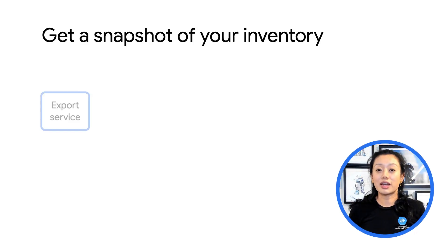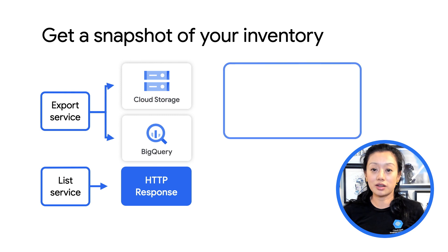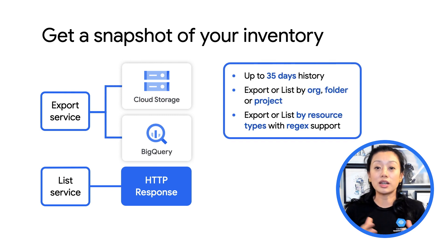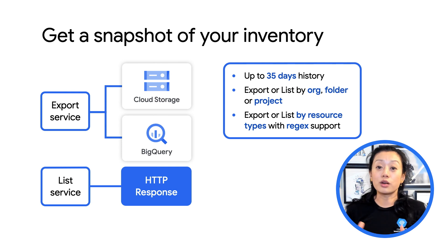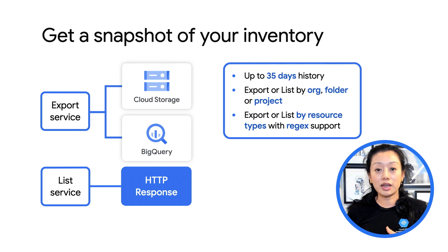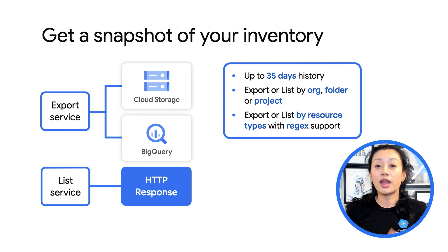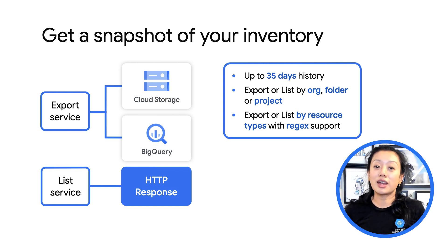Now let's dive deeper into the features. First and foremost, you can get a snapshot of your entire inventory. You can use either the export or the list service. The difference is that export is a long-running operation which will export your data to either a Cloud Storage bucket or a BigQuery table, making it easier for you to directly query and analyze data later. The list API works just like any other list API, except it supports a timestamp, and all data will be included in the standard HTTP response in case you don't want to deal with a storage location.